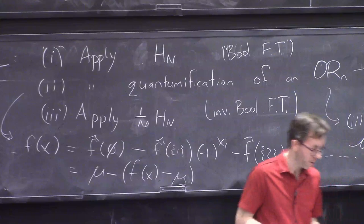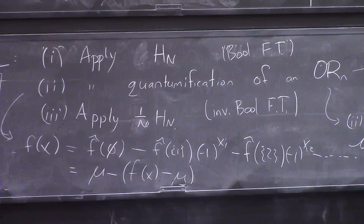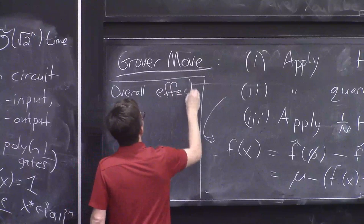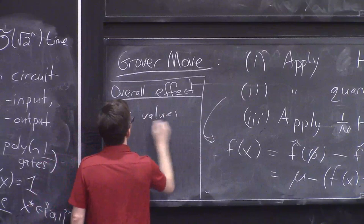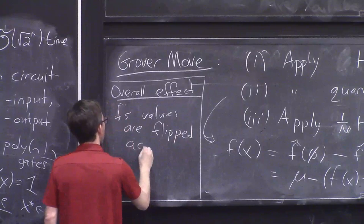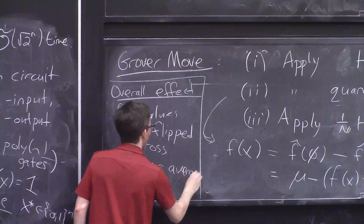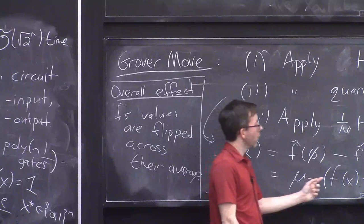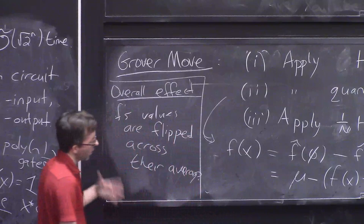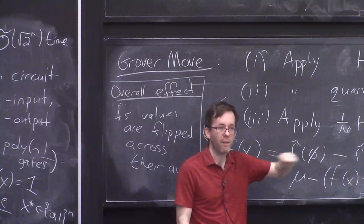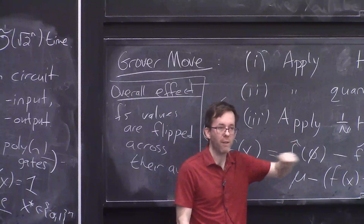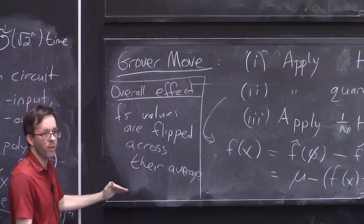So the overall effect of Grover's move is that the vector of F values gets flipped — reflected across their average. The new value of F of x: look at how much the old value differed from the average of all the old values, and then go the opposite direction from the average. For a collection of numbers, transforming them in this way is to reflect all of them across their average. This is the overall effect of the Grover move.